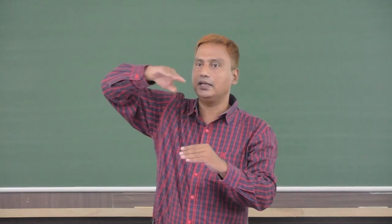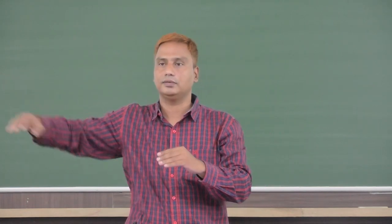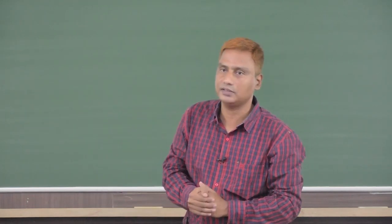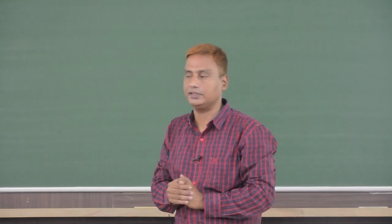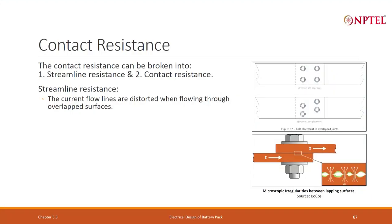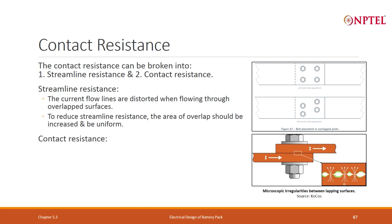The current jumps and then starts flowing on the other surface — that type of resistance is called streamline resistance. To reduce streamline resistance, we need to increase the surface overlap. The easiest way of reducing streamline resistance is to increase the surface overlap.